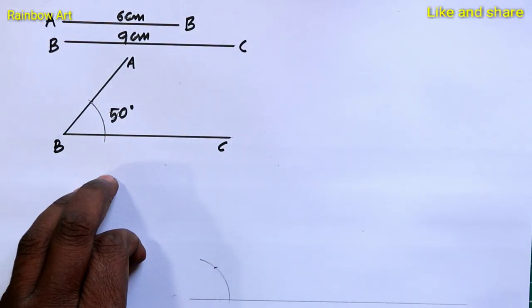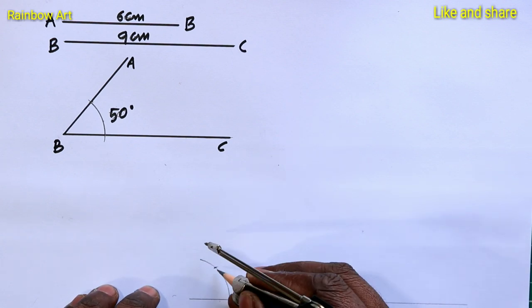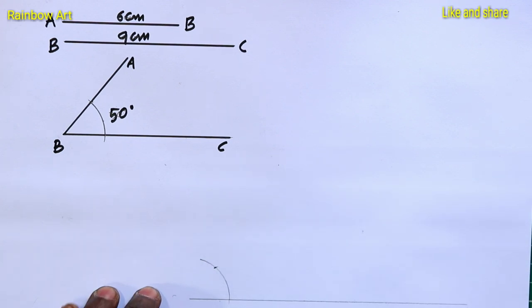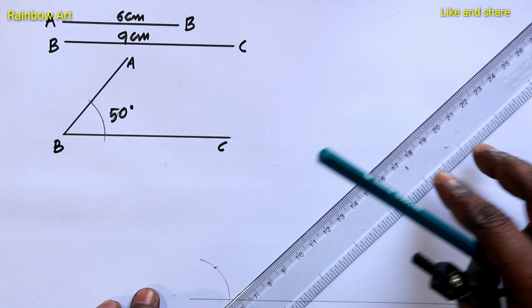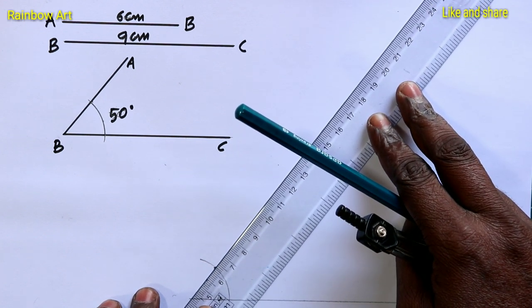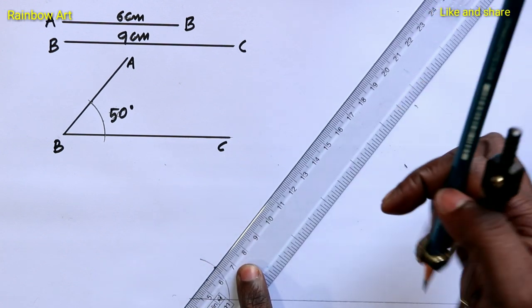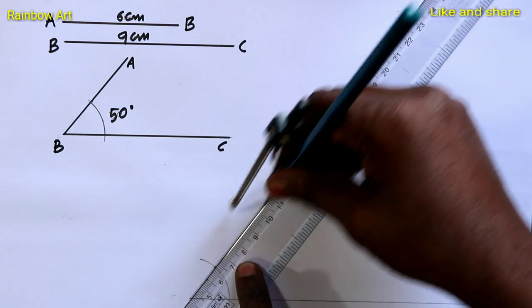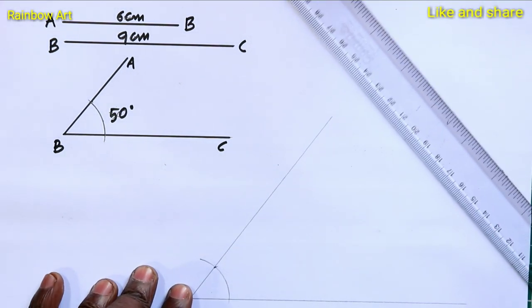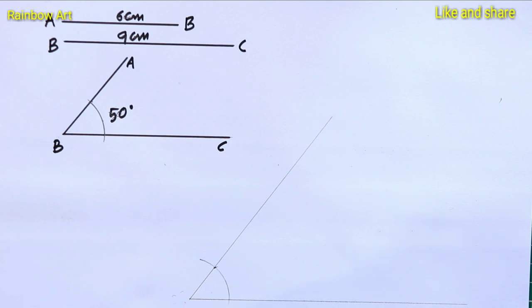And you got that point. And add these two points. Your angle is ready. This is 50 degree.